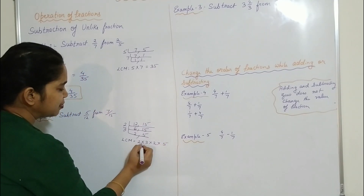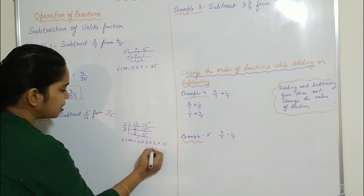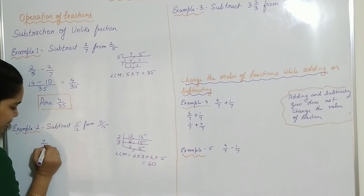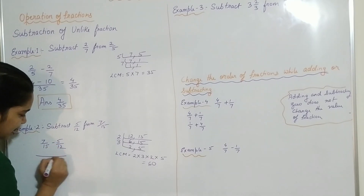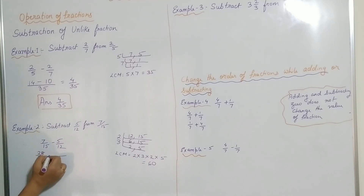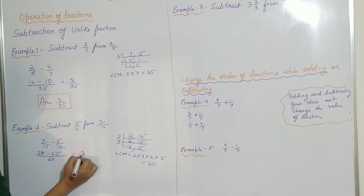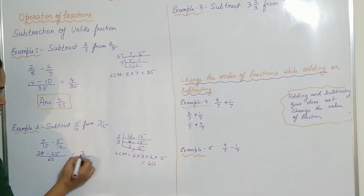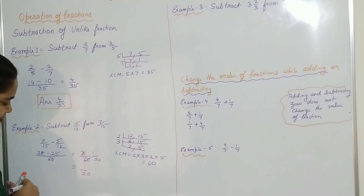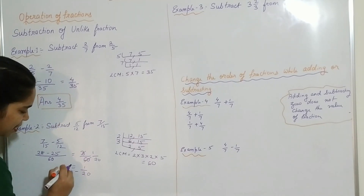So the LCM is 2 into 2 into 3 into 5, which is 60. Now we subtract 7 by 15 minus 5 by 12 with LCM as 60. 60 divided by 15 is 4, and 4 into 7 is 28. 60 divided by 12 is 5, and 5 into 5 is 25. So 28 minus 25 gives 3 by 60. We simplify this and the answer is 1 by 20.